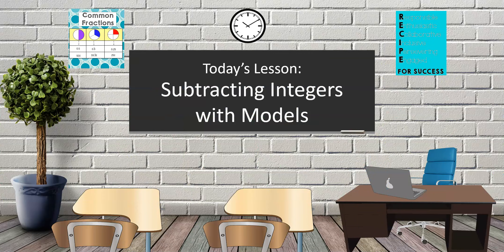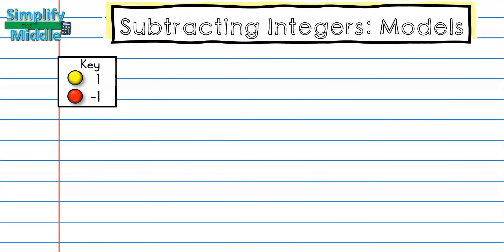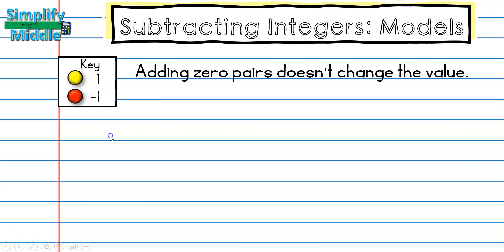Hi and welcome to today's lesson: Subtracting Integers with Models. Let's go ahead and review our counter key because we will be using counter chips today. We know that yellow means positive 1 and red means negative 1.